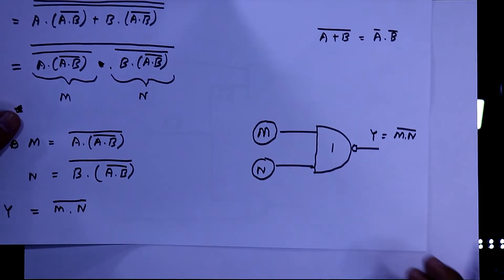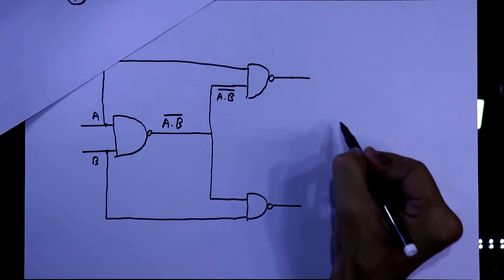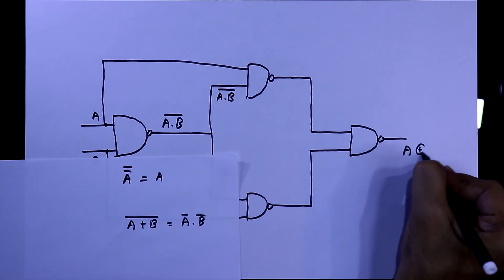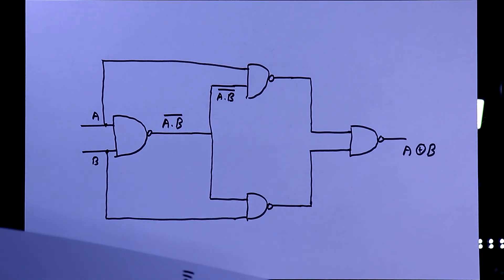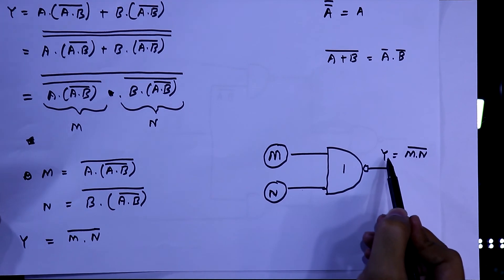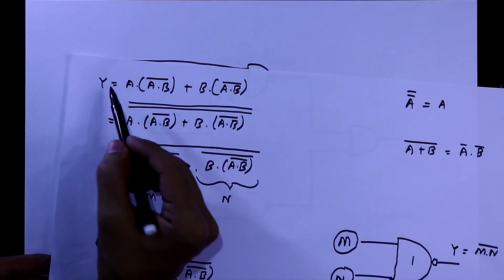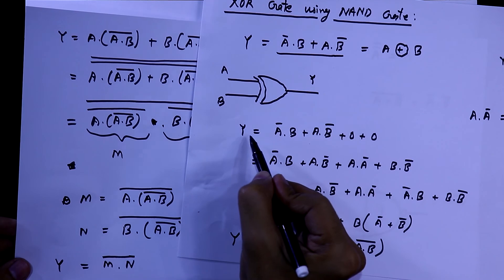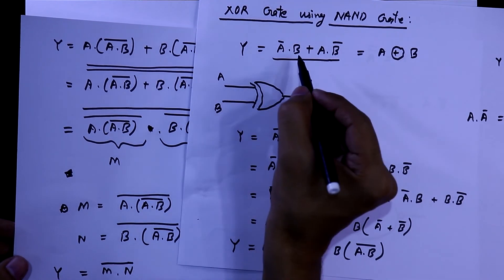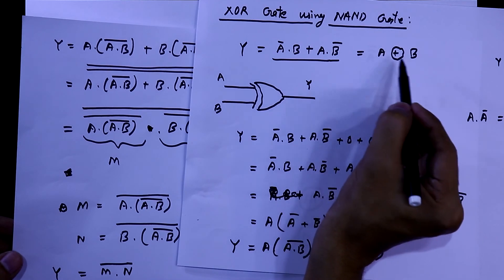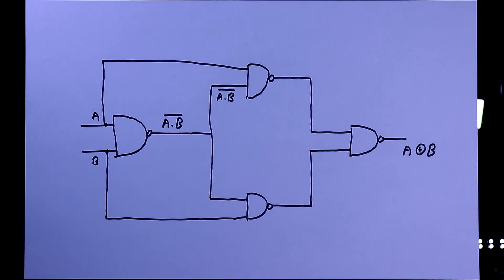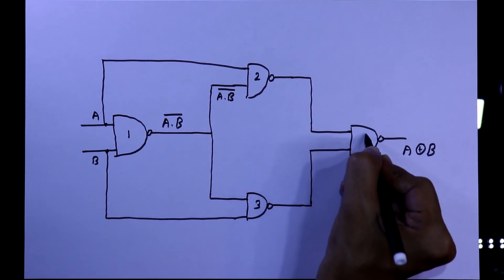The final NAND gate takes M and N as inputs and we can write its output as A XOR B, because Y equals M dot N whole bar, which equals the XOR expression. So we need 4 NAND gates in total: gate 1, 2, 3, and 4. This is the explanation of the logic design.